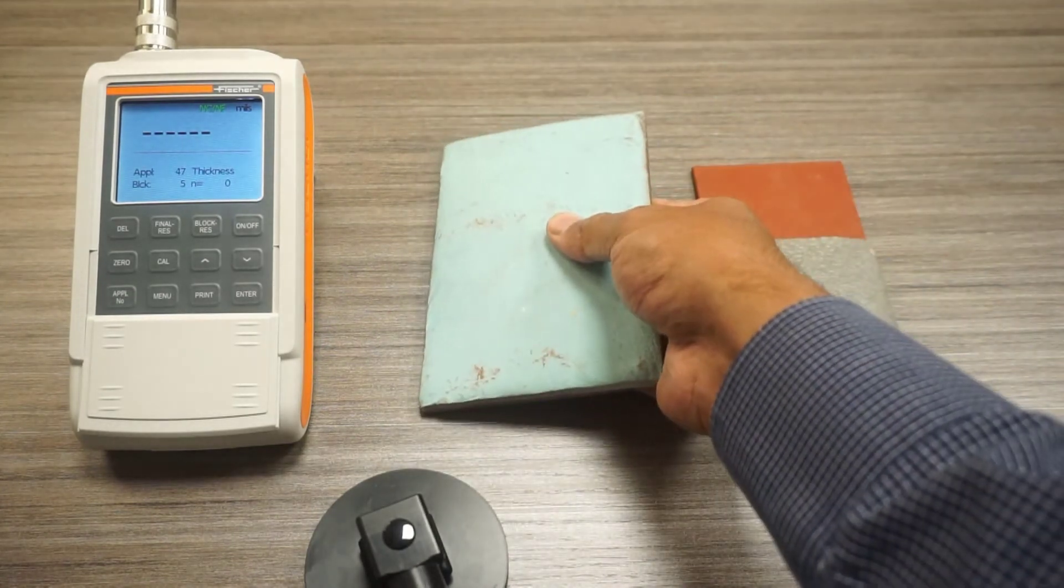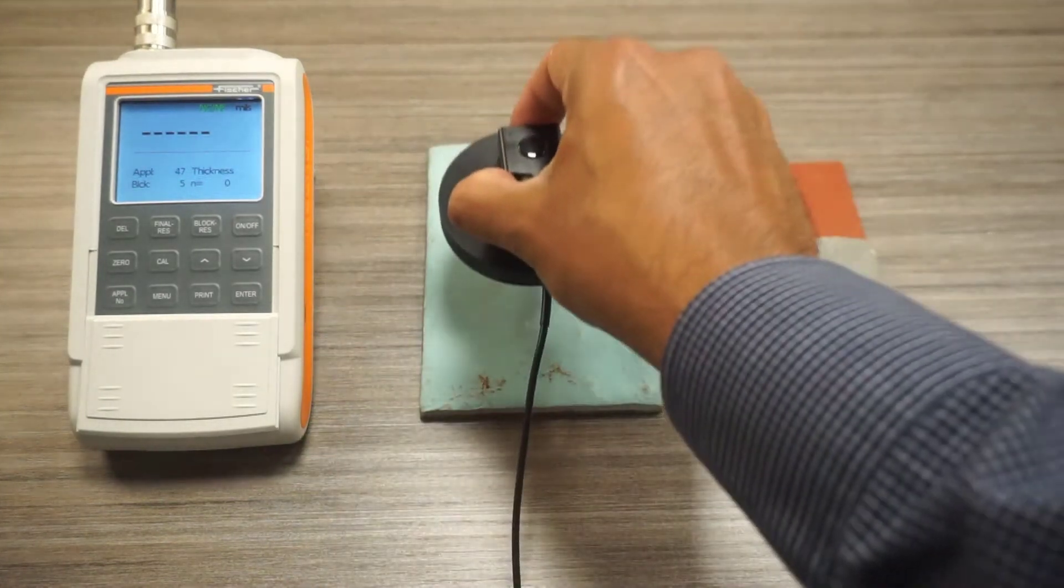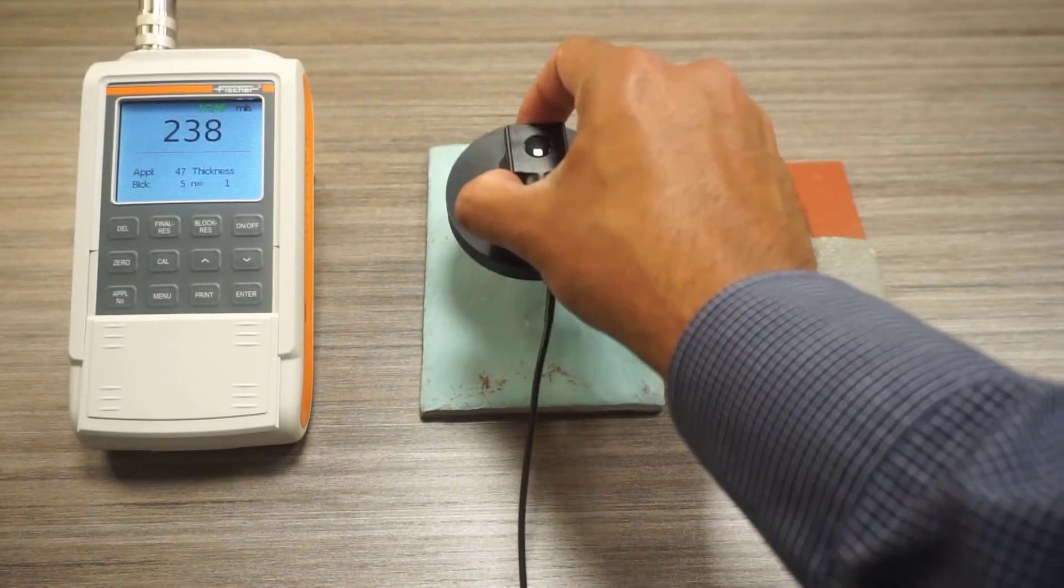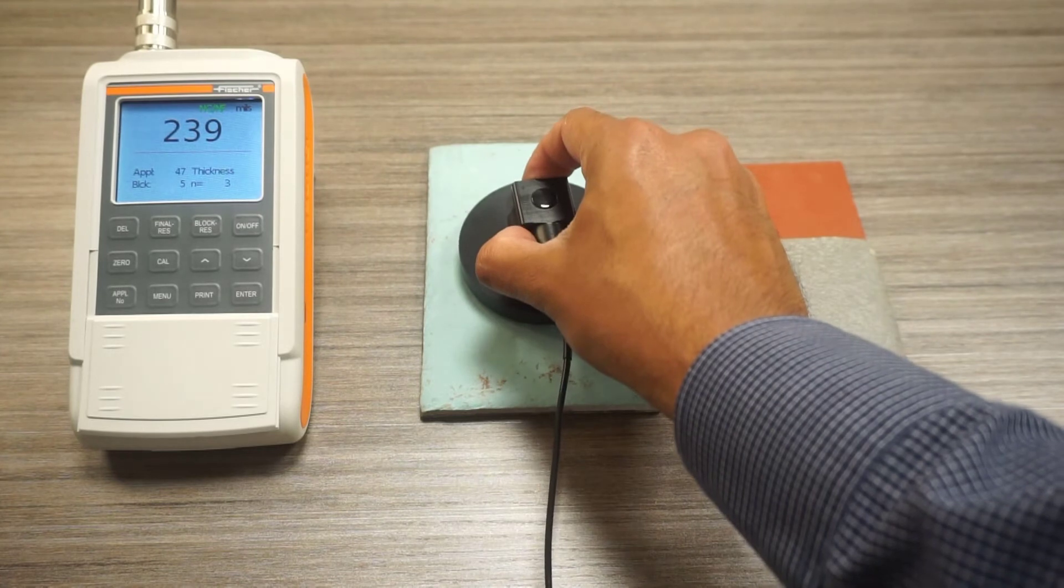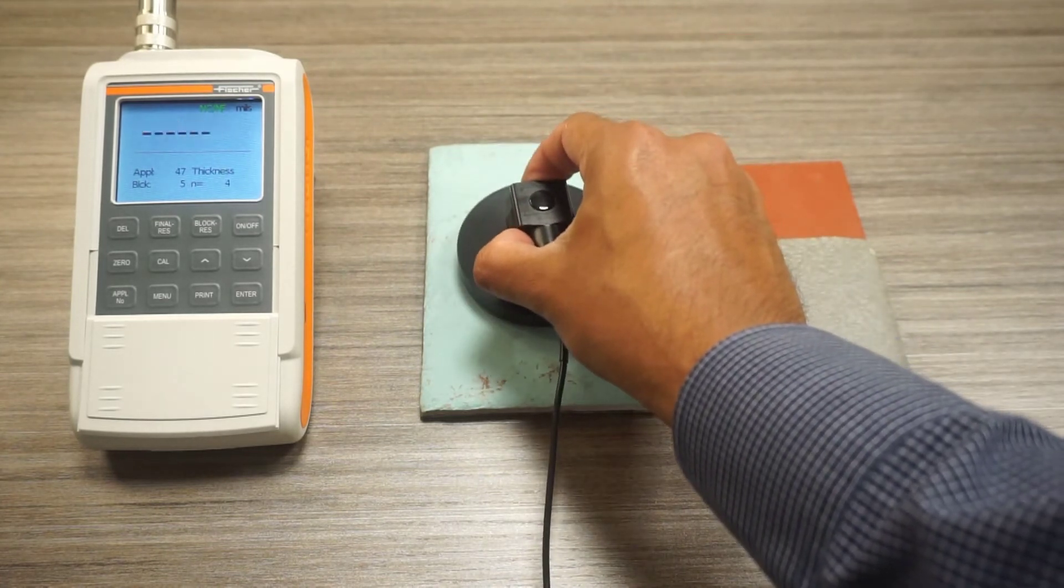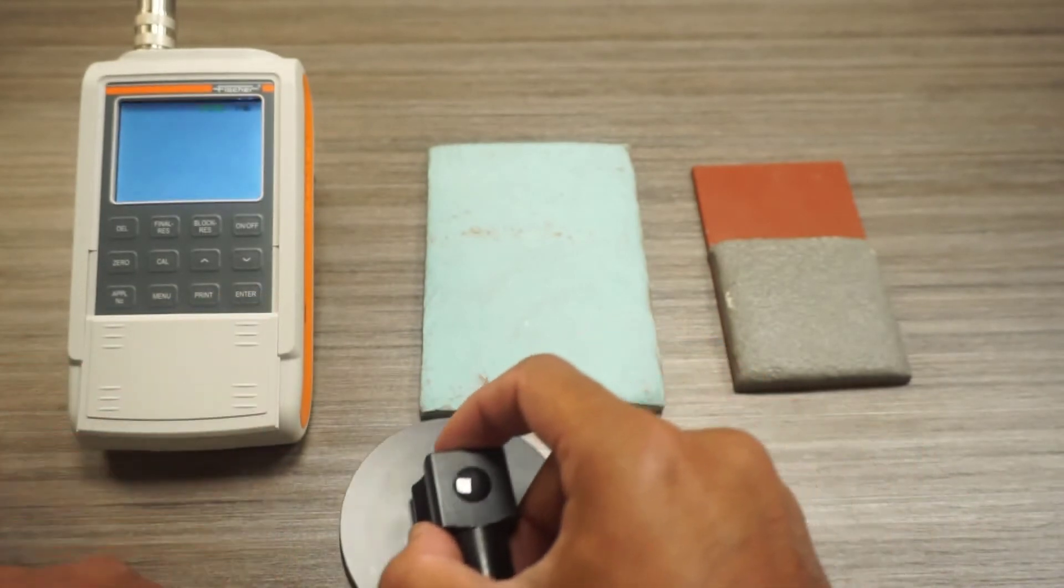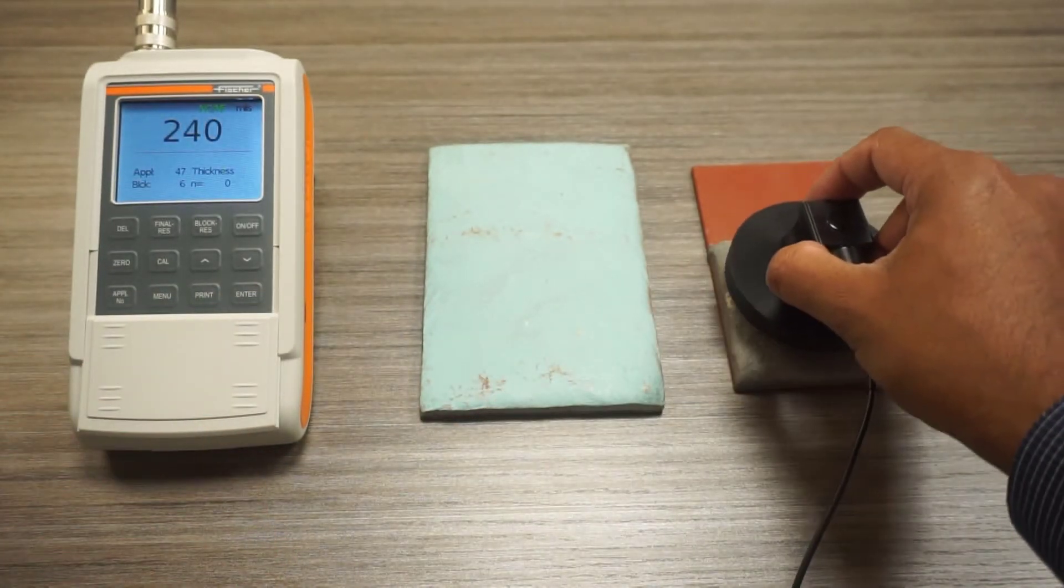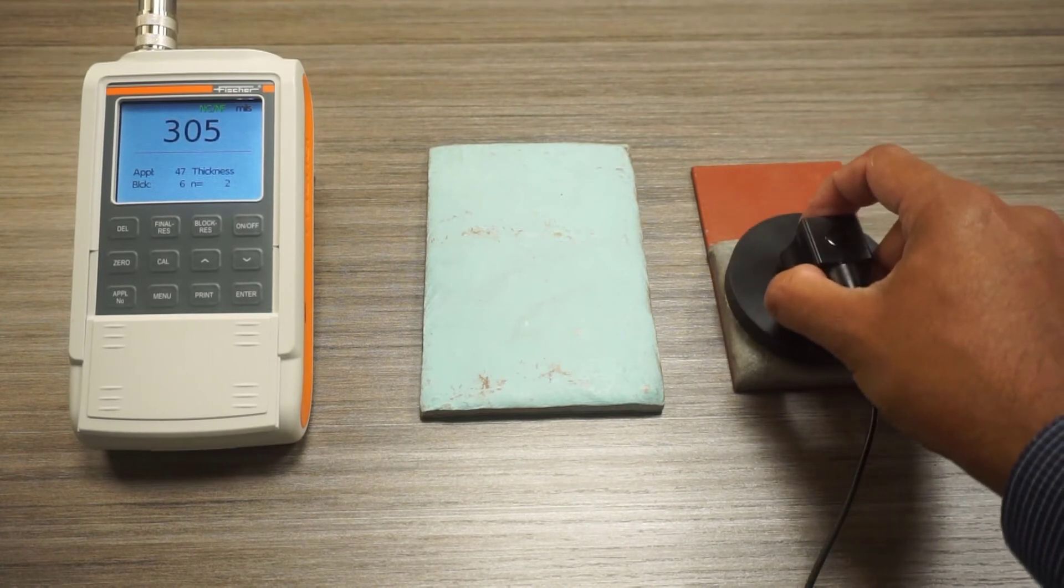Now, I'll perform five measurements on each sample. The values are repeatable even on this rough surface, which generally poses a problem. And we see clear differences in the thickness measured on the two samples.